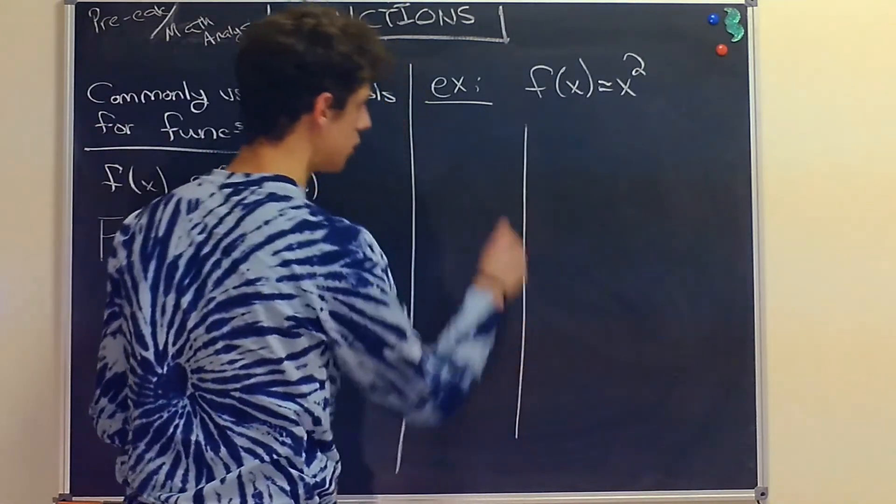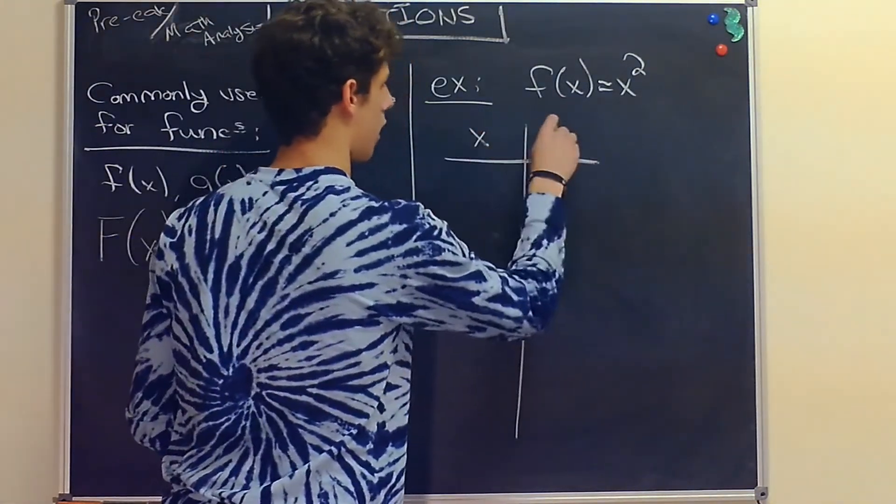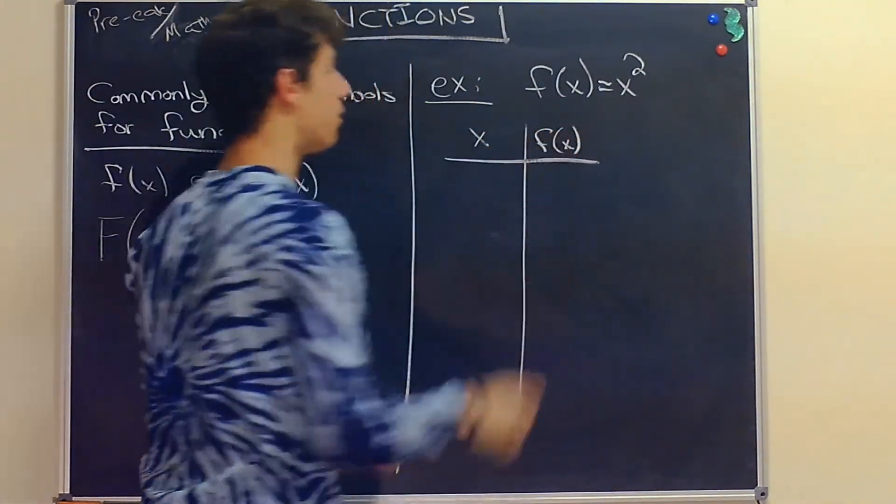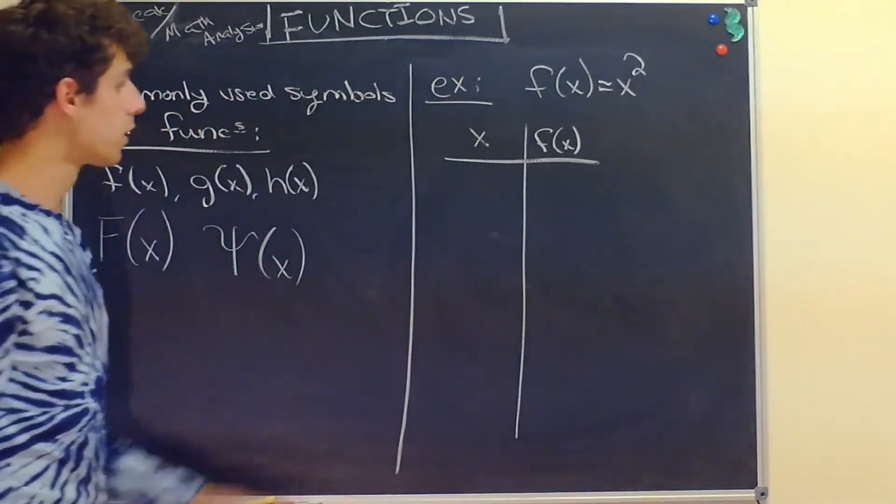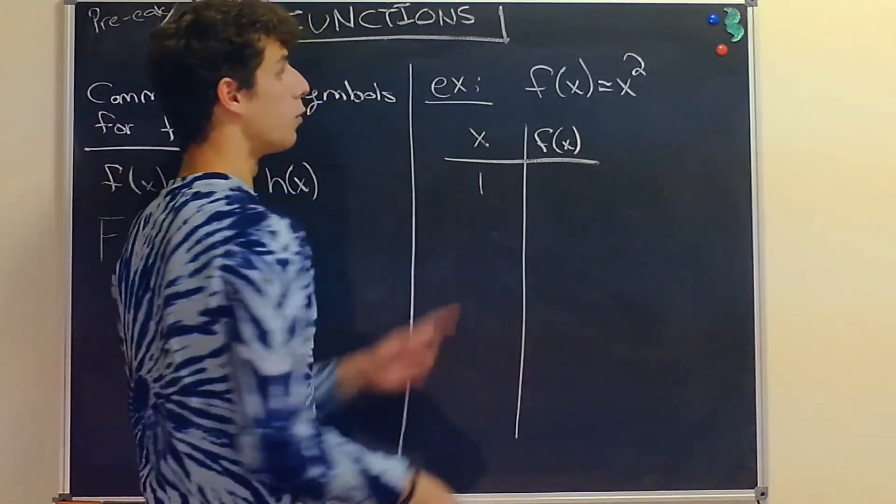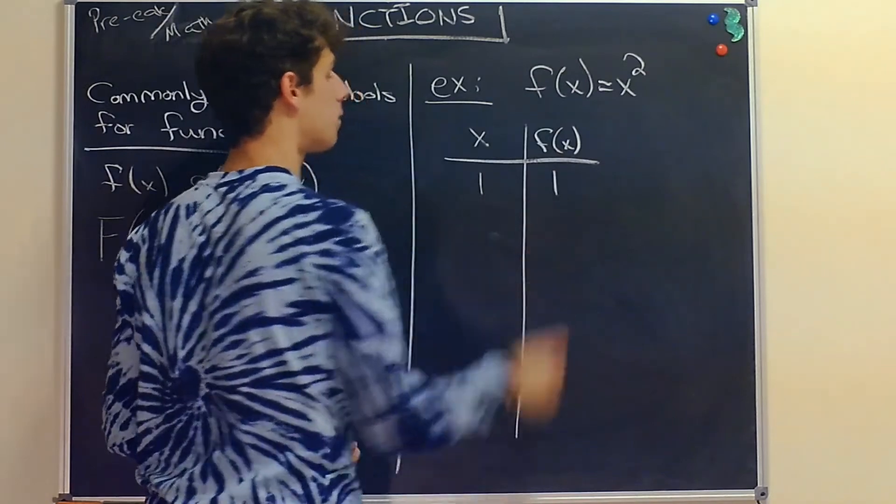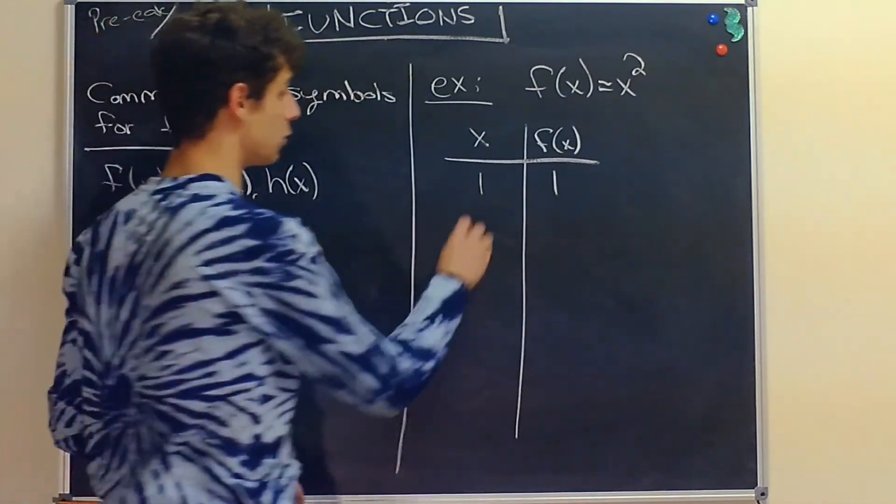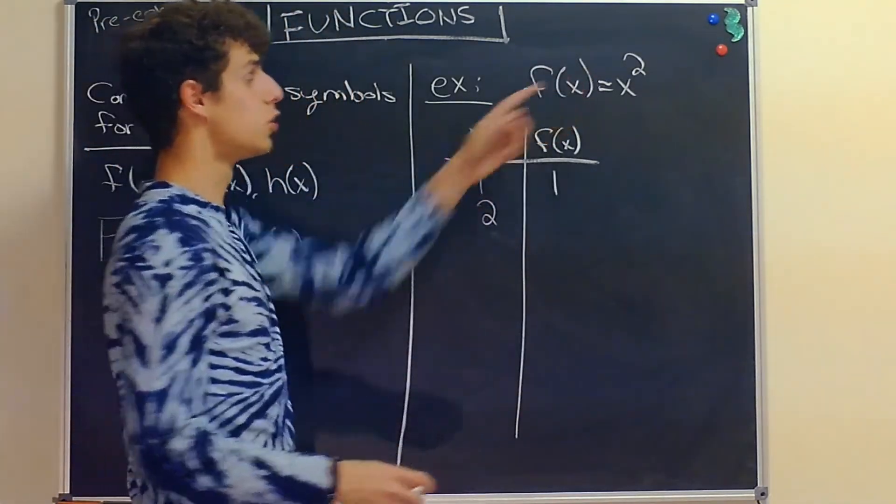Let's make a chart. On the left we have our input, and on the right our output. If we input x = 1, we get 1² = 1. If we input x = 2, we get 2² = 4. For x = 3, we get 3² = 9.